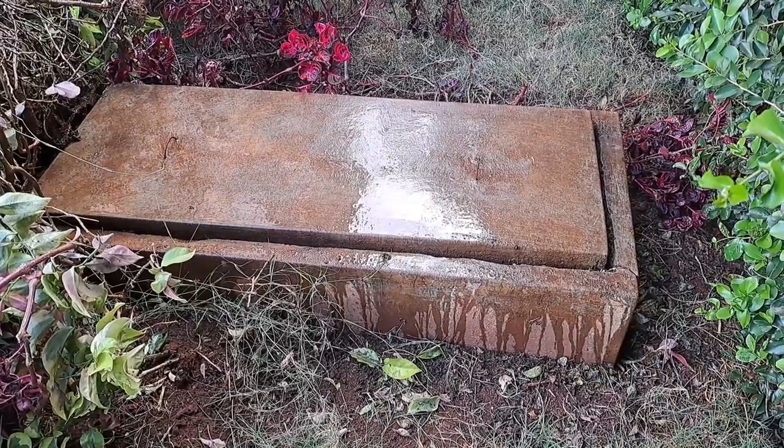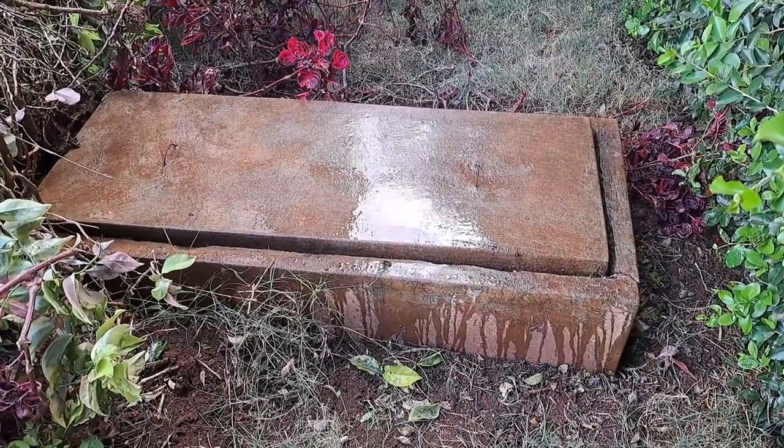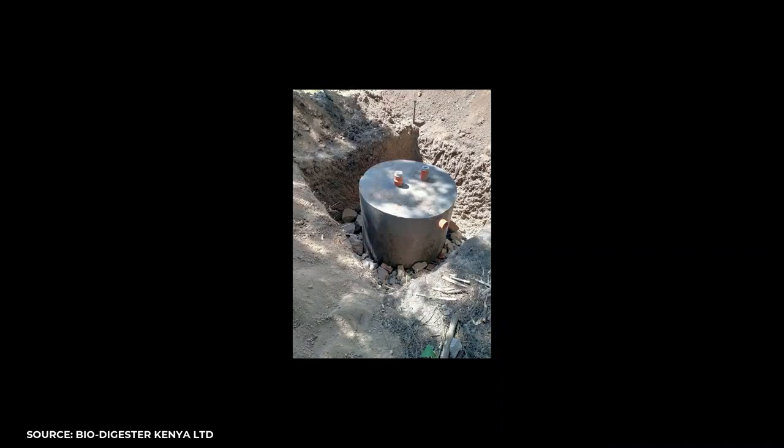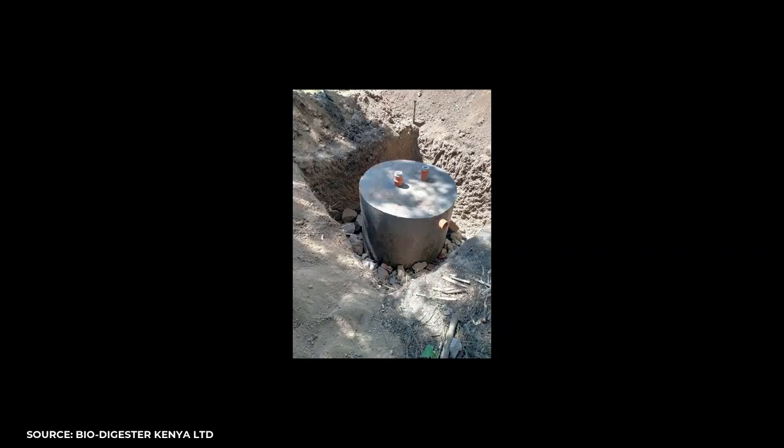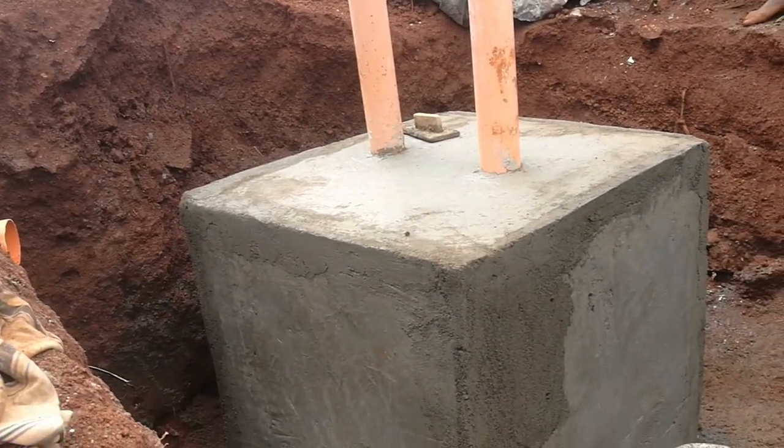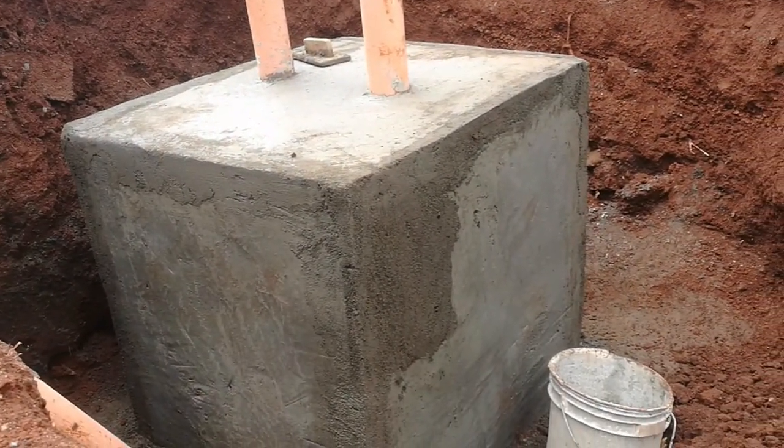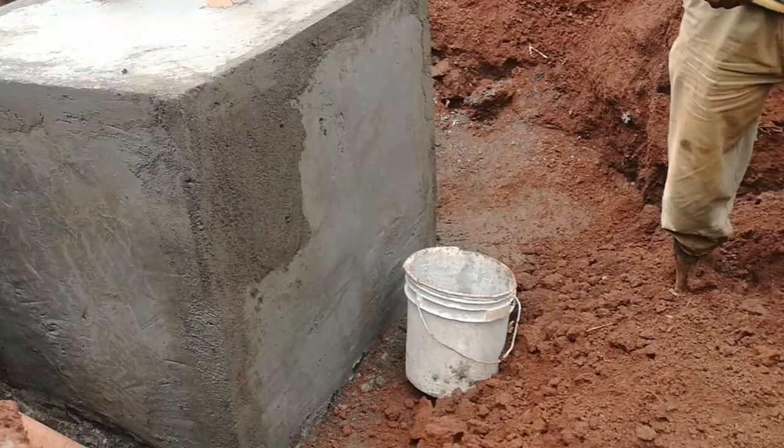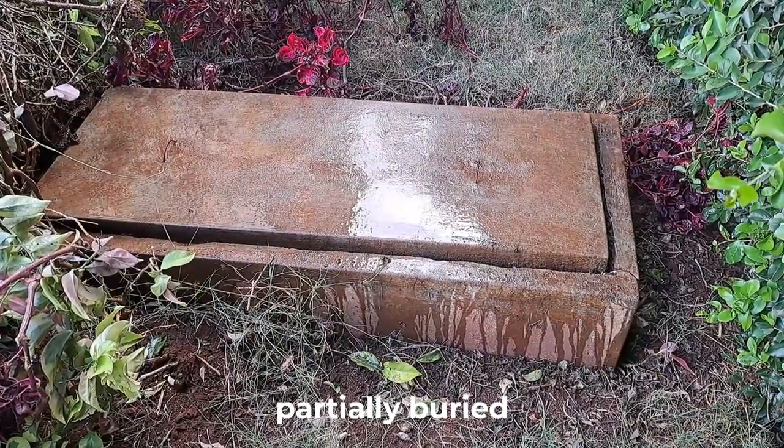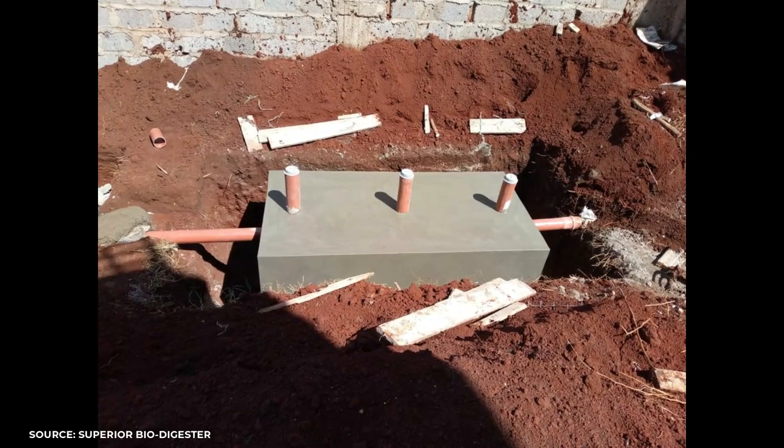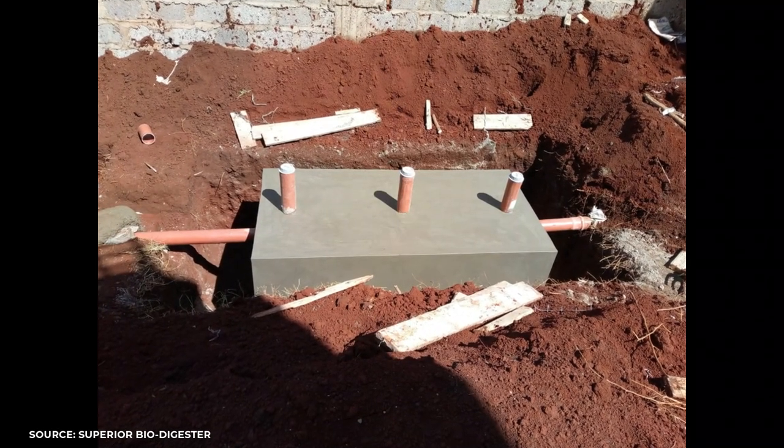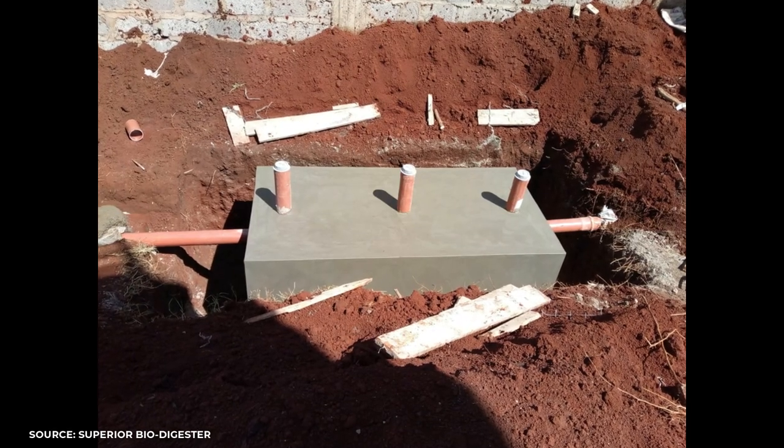The biodigester is normally made of reinforced concrete slabs. It can be rectangular or circular in design, depending on the installer. I've simply focused on the rectangular design in this video, but circular ones work in a similar way. It should be partially buried to expose the top slab at the surface for easy access to the inspection pots. This is also done to ensure that runoff water from rain doesn't get into the biodigester.